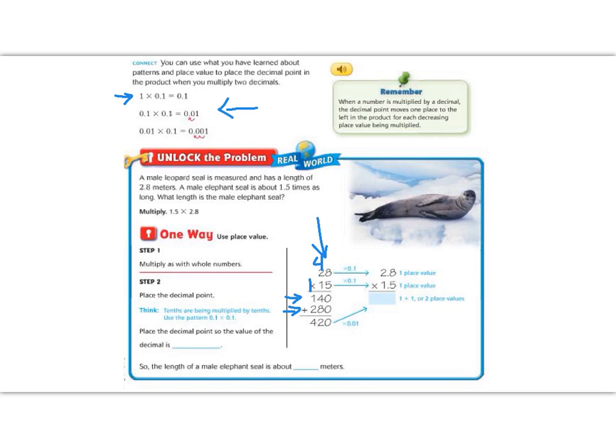This is 2.8 and 1.5, and you notice that I drew in the swoopies to where the decimal is. Because each time we have a decimal place, we need to add that into our answer. So our answer is 420, but we need to put two decimal places into our answer.